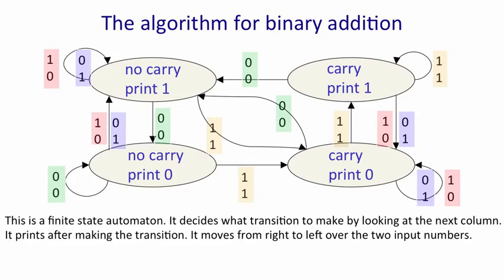If, however, it sees a one, zero or a zero, one, it goes into the carry state but prints a zero. If it sees a zero, zero, it goes into the no carry state and prints a one. And so on.